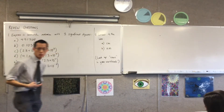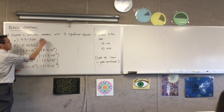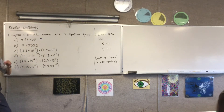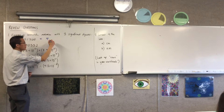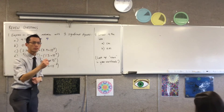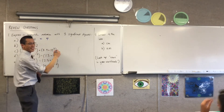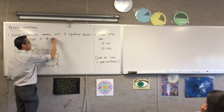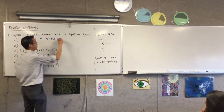Can we get these first two out of the way — they're much more straightforward. Can someone give me an answer for part a? Four... four five two. Is there an extra bit? 4.52 — yes, times 10 to the 5.